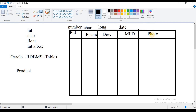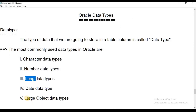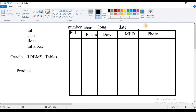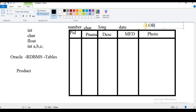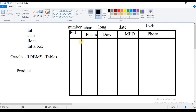Photo is an image, which is unstructured data. For storing unstructured data in a column, we use Large Object data types — LOB data types. We store unstructured data using these Large Object data types. After specifying these data types, we can create a table and insert values corresponding to each column's data type.